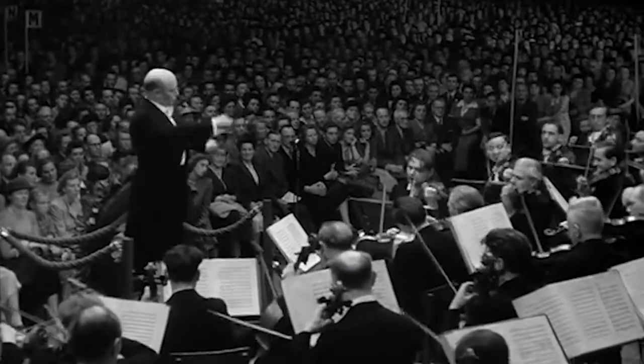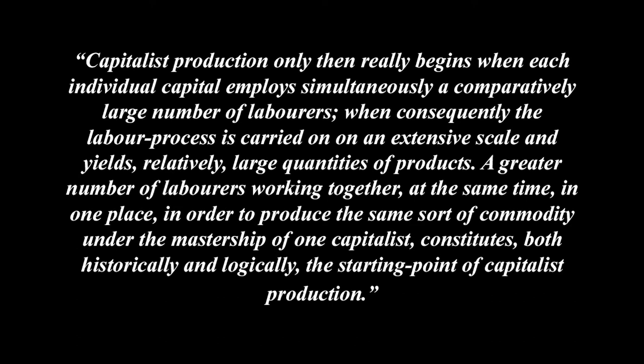Cooperation also allows for the economising of the means of production, as they become used in common ownership by many workers. It also implies some form of directing authority — someone who can guide the process, like the conductor of an orchestra. Capitalist production only then rarely begins when each individual capital employs simultaneously a comparatively large number of labourers, when consequently the labour process is carried on on an extensive scale and yields relatively large quantities of products. A greater number of labourers working together at the same time in one place, in order to produce the same sort of commodity under the mastership of one capitalist, constitutes both historically and logically the starting point of capitalist production.